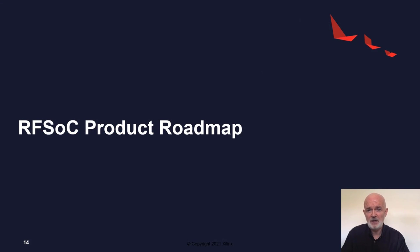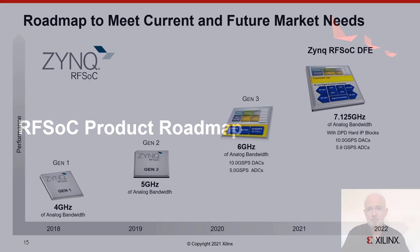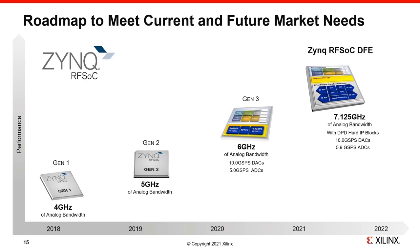Let's take a first high-level look at the RFSOC product roadmap. Since its launch in 2018, the RFSOC product family has expanded and continues to improve at a rapid rate. The roadmap consists of three generations of devices, with the newest — the RFSOC DFE — recently announced at the top right of the diagram. With each generation, key performance metrics continue to improve: the analog bandwidth has gone from 4 GHz to 7.125 GHz, and the ADC sampling rates have increased from 4 gigasamples per second at 12 bits, while the DAC sampling rates have gone from 6.5 to 10 gigasamples per second.